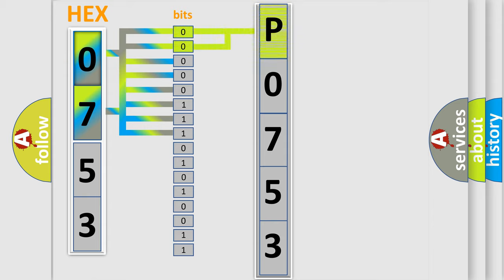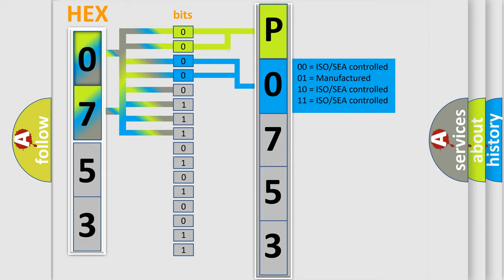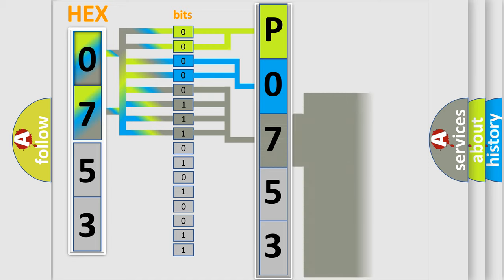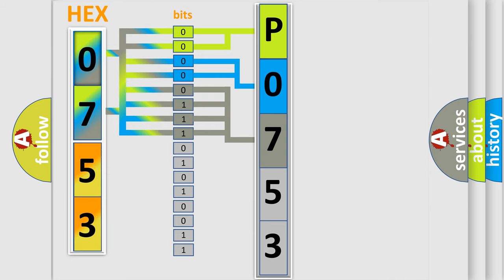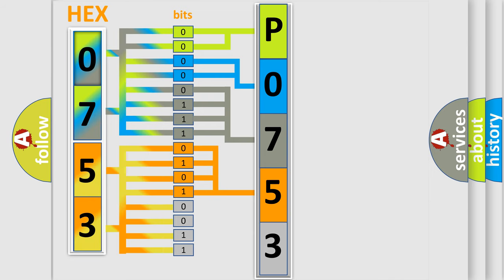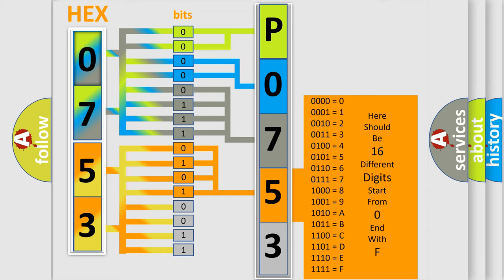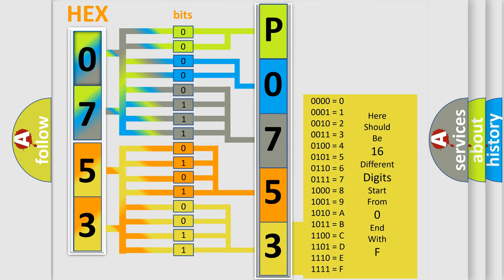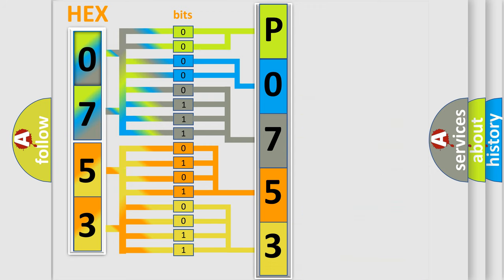Zero is low level; one is high level. By combining the first two bits, the basic character of the error code is expressed. The next two bits determine the second character. The last bits of the first byte define the third character of the code. The second byte is composed of a combination of eight bits: the first four bits determine the fourth character, and the combination of the last four bits defines the fifth character.